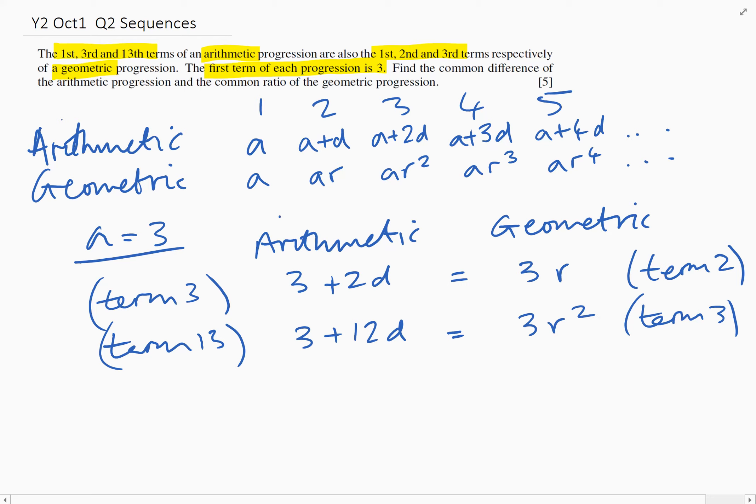So we just need to solve these two simultaneous equations now to find what d and r equal. I think the first thing I would do is probably just divide the two equations together. If we call this one number one and this one number two, I would divide equation two by equation one.